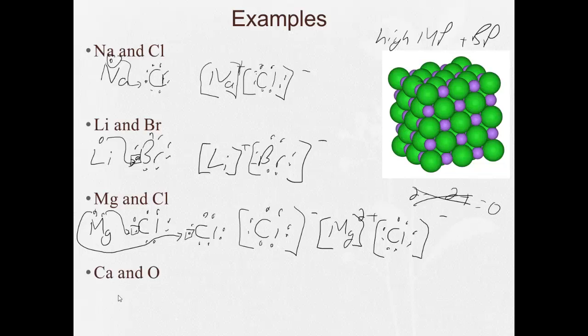So finally, calcium and oxygen. C, A, one, two. Oxygen, one, two, three, four, five, six. It has spot for two more. Here you go. One. And here you go. Two. So now we have C, A, two plus. O, one, two, three, four, five, six, seven, eight. Two minus. And even Steven, they're equal.